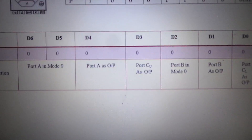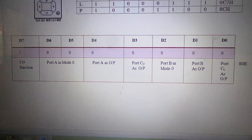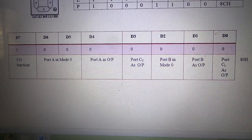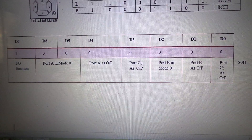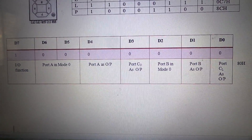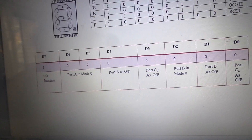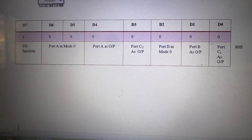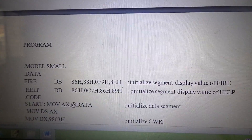The control word that we will be using for this particular program will be ATH. We need to configure A255 to operate in such a way that port A, port B and port C — out of which port C is being used as two 4-bit ports — so all 3 ports will be acting as output ports. This can be done by configuring the control word as ATH.